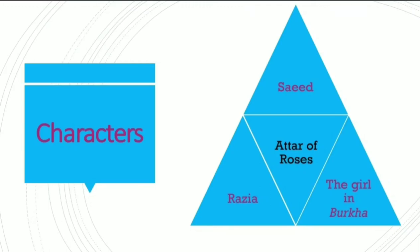Coming towards the characters of the short story, there are mainly three characters: Saeed, Shazia, and the girl in the burqa. I have also added another one in the middle of all these three, that is attar of roses, because the smell of attar has some kind of significance to Saeed, and it also means something to the girl in burqa. In the end, in the closing lines, Razia is also affected by it, so it can be taken as a character as well.